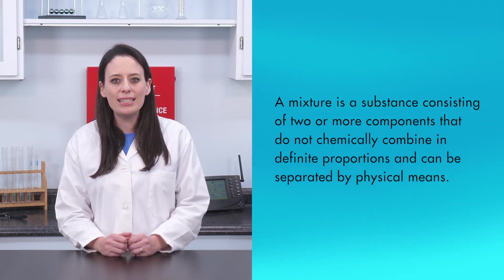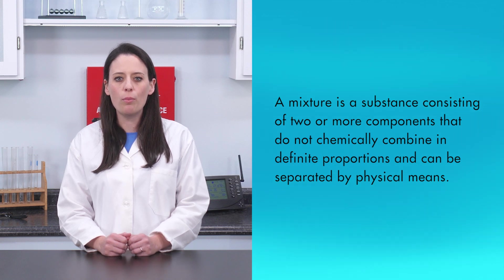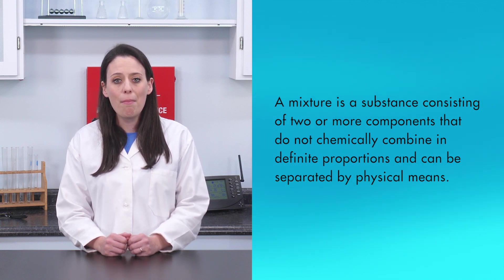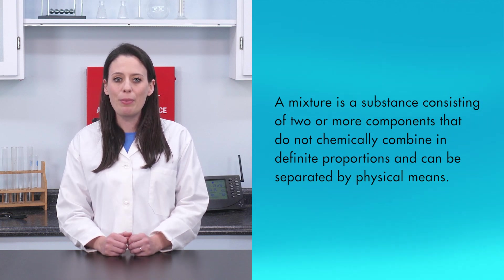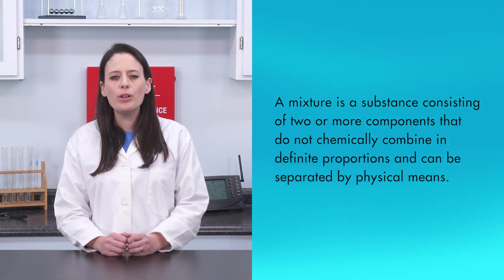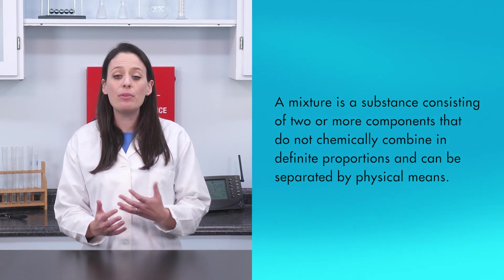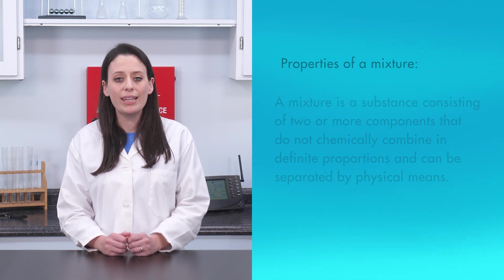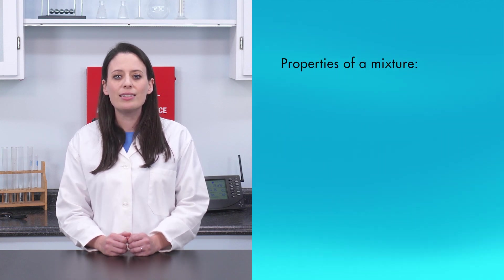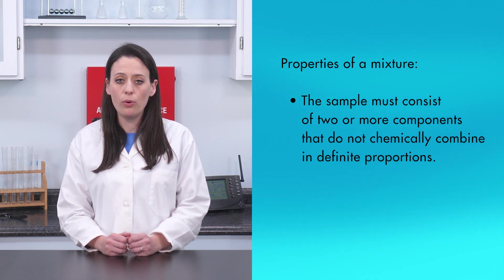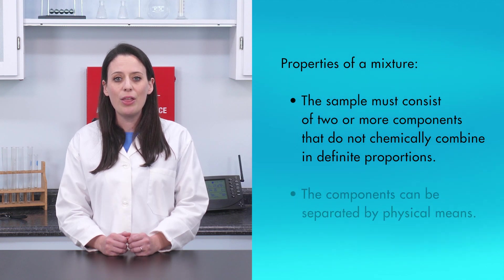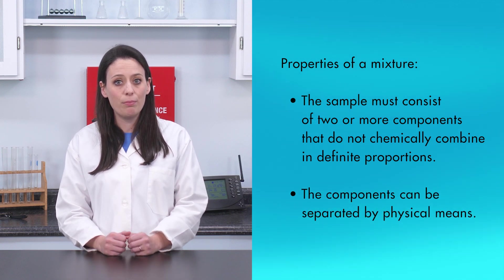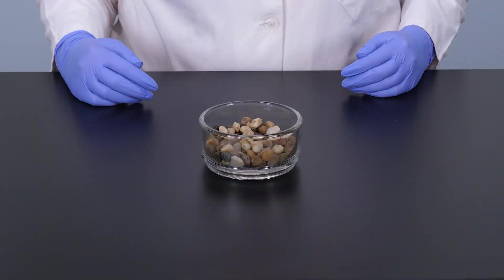A mixture is a substance consisting of two or more components that do not chemically combine in definite proportions and can be separated by physical means. So when trying to determine if a sample is a mixture, we must look for these properties. The sample must consist of two or more components that do not chemically combine in definite proportions, and the components can be separated by physical means.